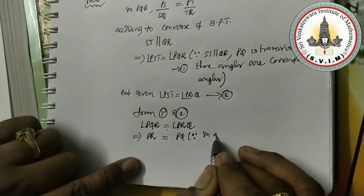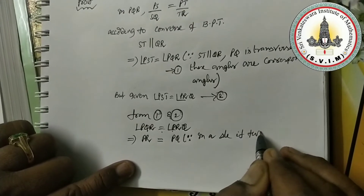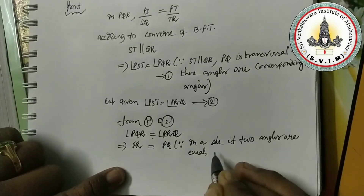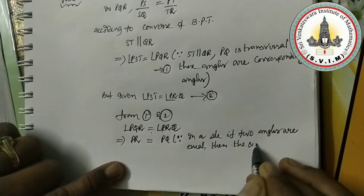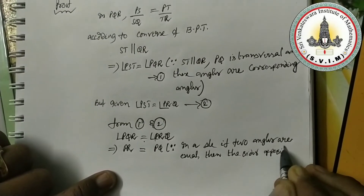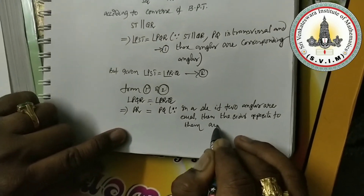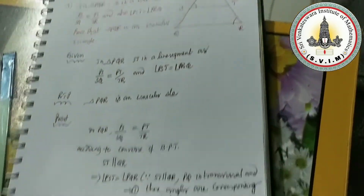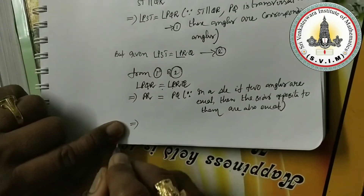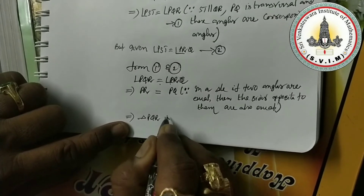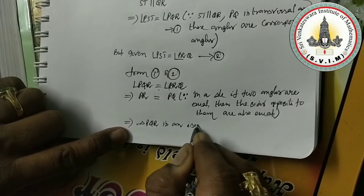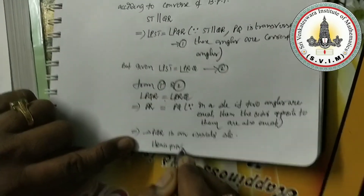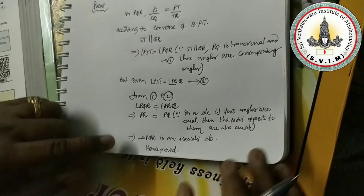The reason for writing PR equals PQ: in a triangle, if two angles are equal, then the sides opposite to them are also equal. Since two sides of triangle PQR are equal, triangle PQR is an isosceles triangle. Hence proved.